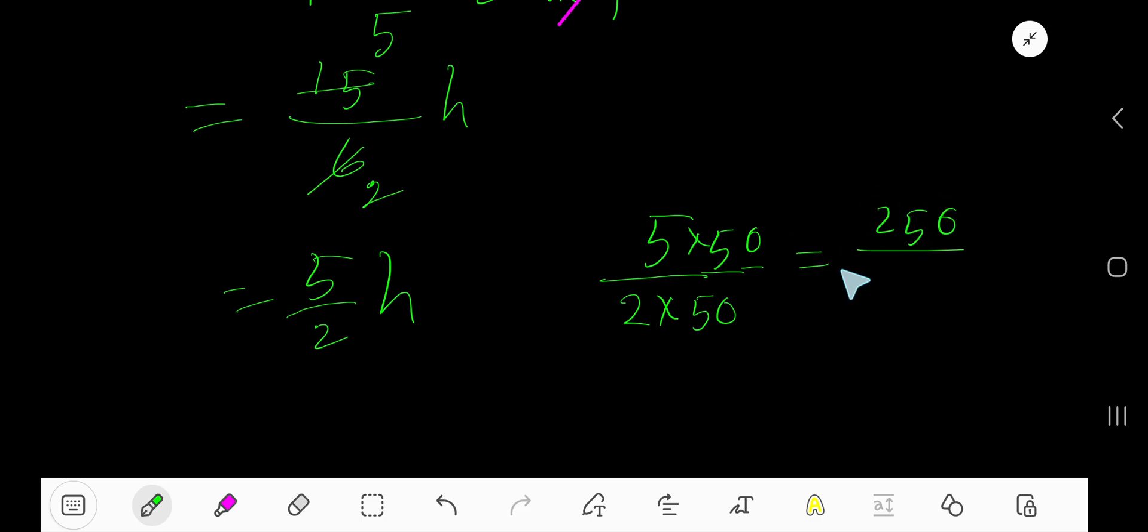Look, 10, 100, 1000 - these are called powers of 10. 10 to the power 1 means 10, 10 to the power 2 means 100. To divide a whole number by a power of 10, just count the number of zeros.